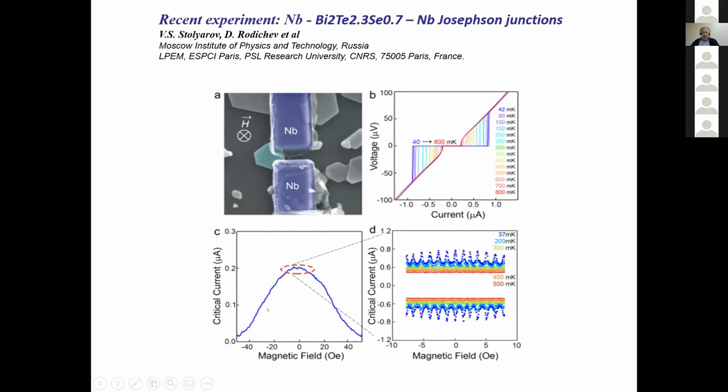First of all we have this background which is known for small junctions. We don't have full Fraunhofer pattern because the size is very small. Instead we have pair breaking which is described very well by existing theories, for example by Kupriyanov and Likharev and others. But at very low temperatures, shown here as a zoom-in of this field range, one can see another effect - very tiny oscillations with a periodicity of the order of half an Oersted to one Oersted. These oscillations disappear at higher temperatures as shown here.